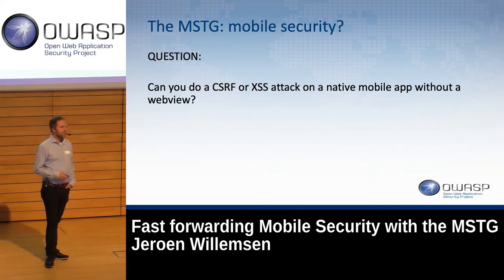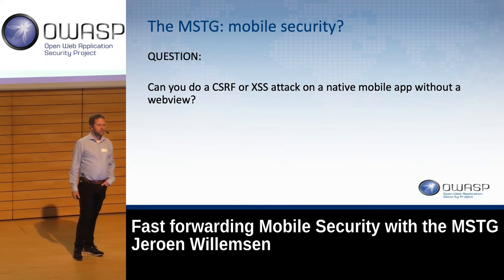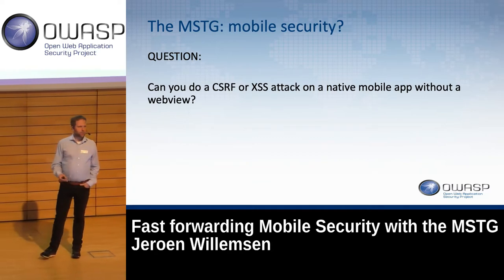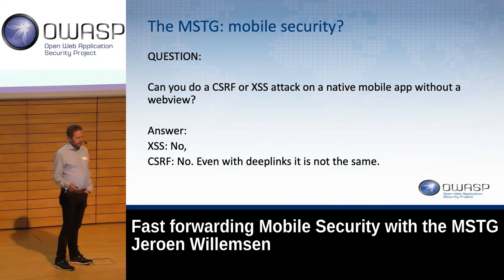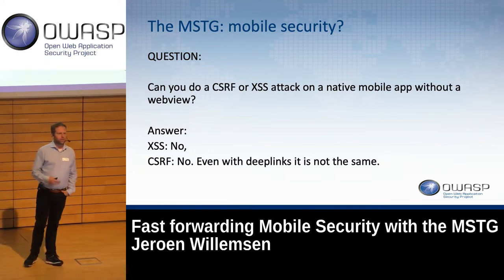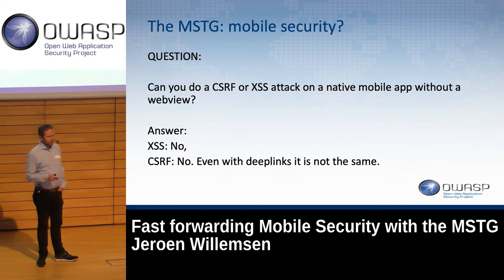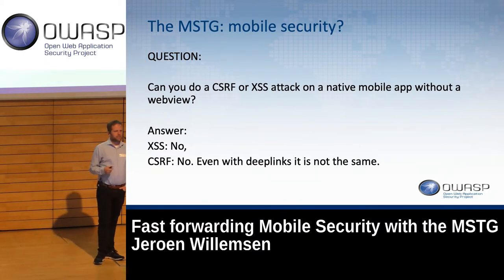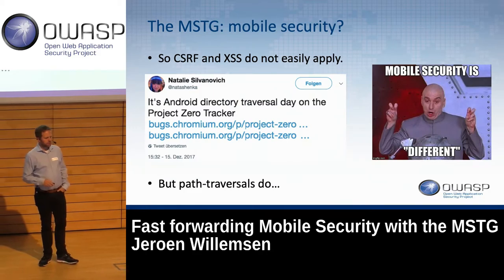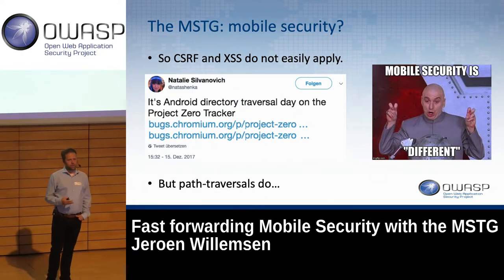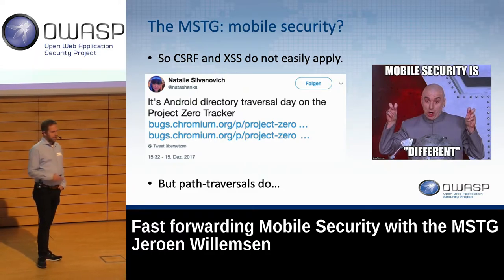If you do a cross-site scripting attack with JavaScript in something that doesn't have an engine to interpret JavaScript, you probably can't exploit that script. So in a fully native app, cross-site scripting doesn't really apply — you could try to load some strings but that doesn't do anything. Cross-site request forgery is a little different; with deep linking you can get something in, especially in Android, but it's not the same as on the web.